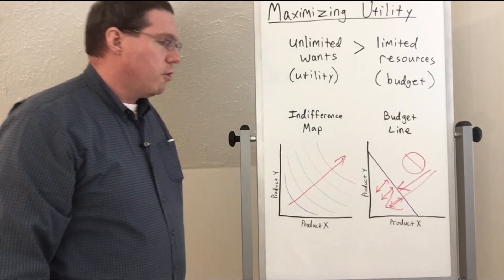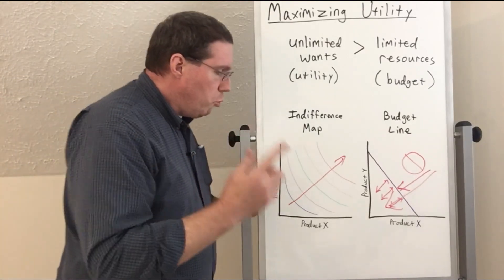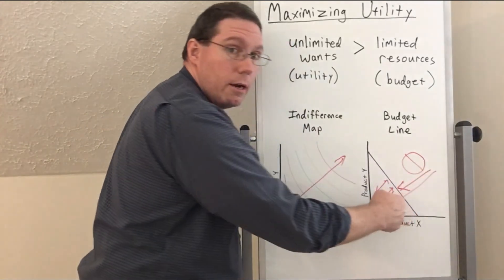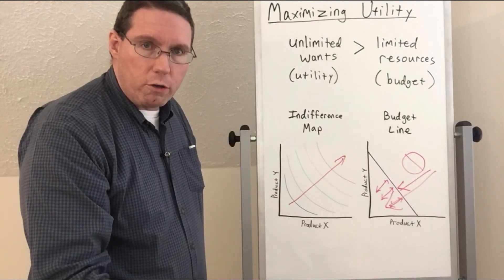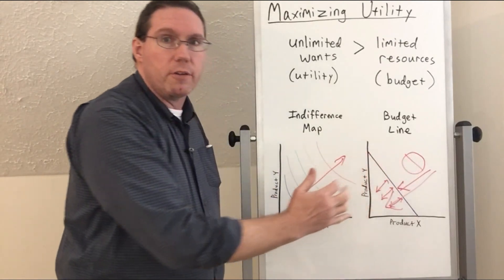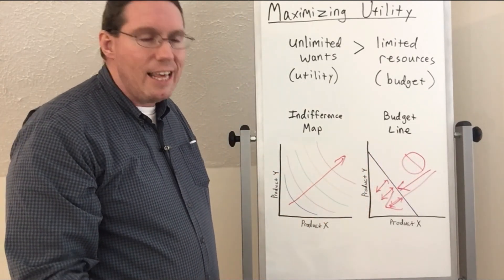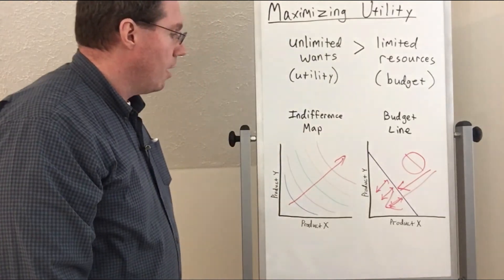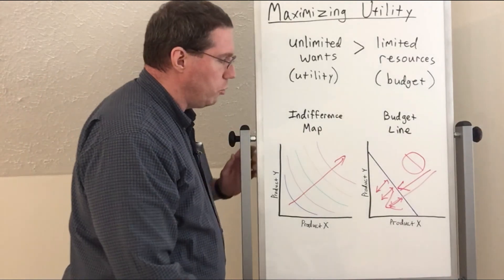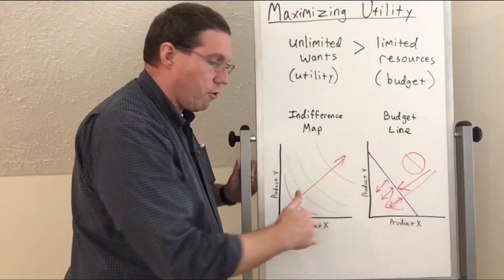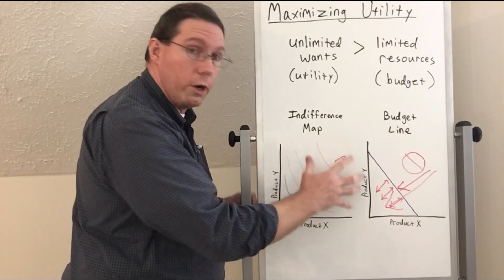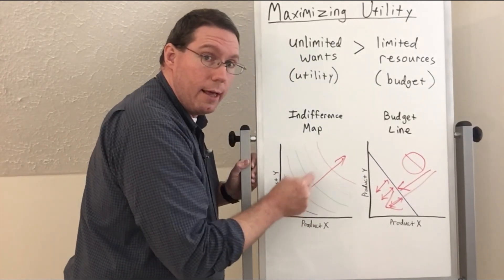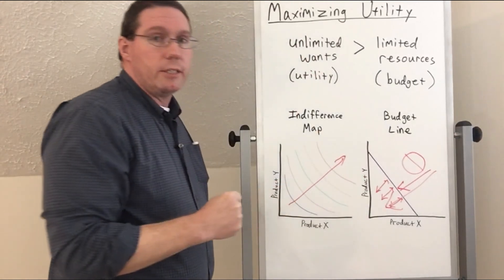It's really important that you understand the idea that you will always want to be out here, and resources will always be constraining you in here. That is a naturally existing struggle. Just because we can move our budget out doesn't mean it will ever become unlimited — it will never become an unlimited budget, even though our desires will always be unlimited. So here's what we're going to do: we are going to draw the budget line and the indifference curves on the same coordinate plane and try to understand how we can get the most utility out of the limited budget we have.